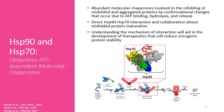What are Hsp70 and Hsp90? These two proteins are abundant molecular chaperones that are involved in the refolding of misfolded and aggregated proteins by conformational changes that occur due to ATP binding, hydrolysis, and release. Direct Hsp90-Hsp70 interaction and collaboration allows for misfolded proteins to mature. Understanding these mechanisms of interaction will aid in the development of therapeutics that will reduce oncogenic protein stability.